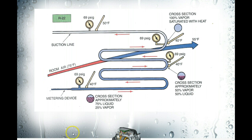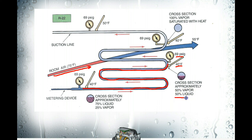Here we have 75 degree Fahrenheit room air being blown across the evaporator coil. This refrigerant is flowing through here, boiling and absorbing heat as it changes state. Remember, that change of state takes a tremendous amount of heat energy — it's absorbing heat just like a sponge. Theoretically, halfway through the coil, we're still at 40 degrees and 69 PSI G, and we're now 50-50 liquid and vapor. Because we have liquid and vapor together, we are still in the saturated state, and we continue to boil all the way through this coil, absorbing heat along the way.